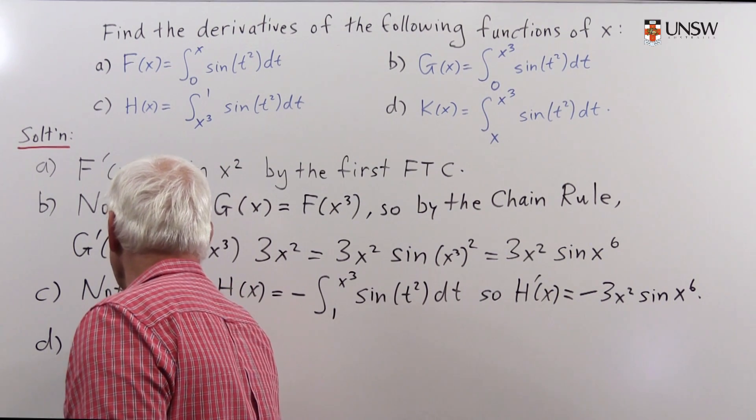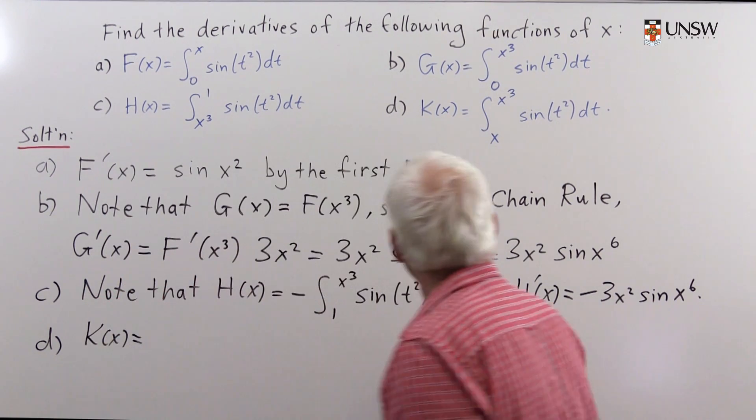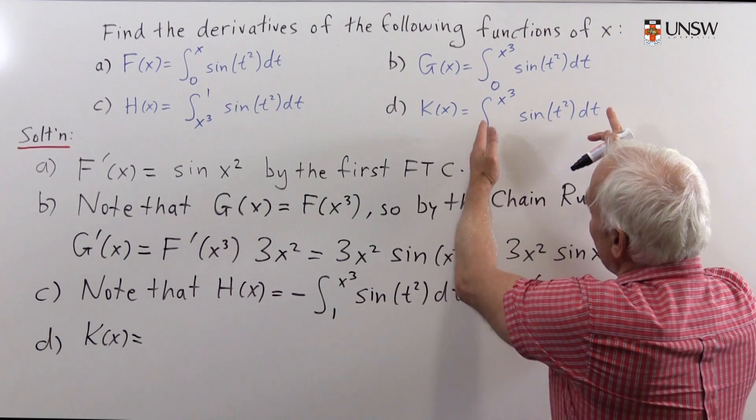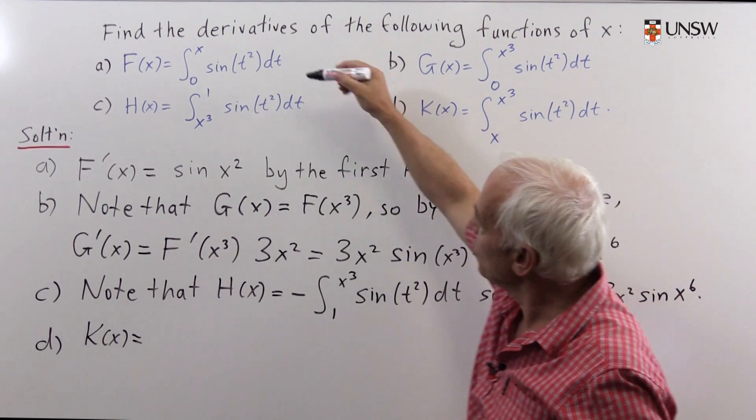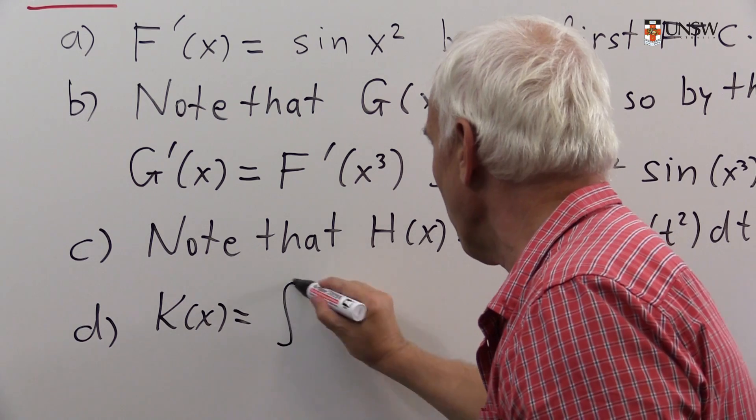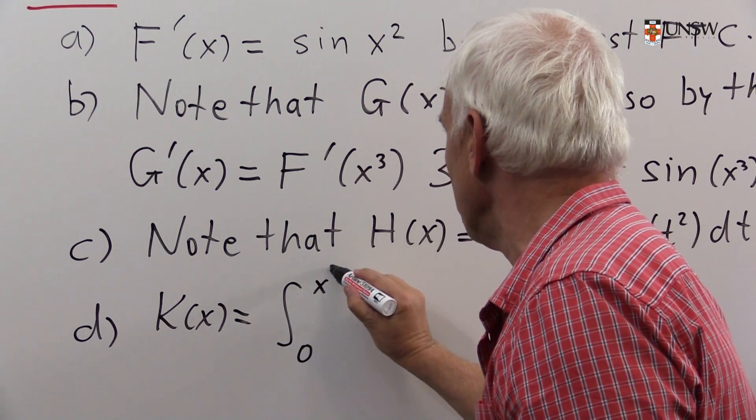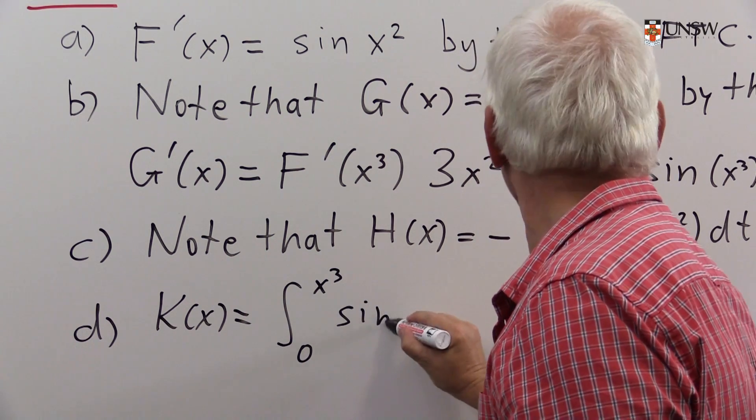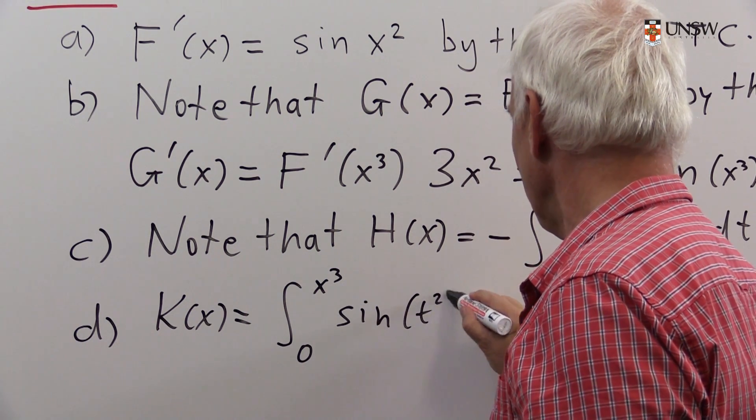K(x) can be rewritten as essentially two integrals. We'll write it as the integral from 0 to x³ of sin(t²) dt